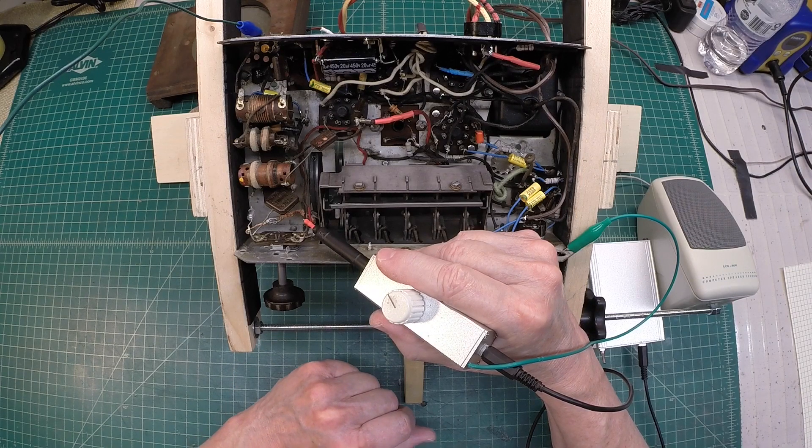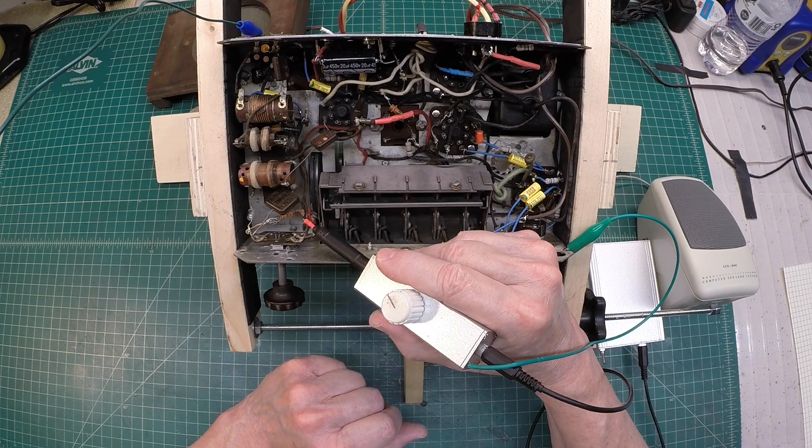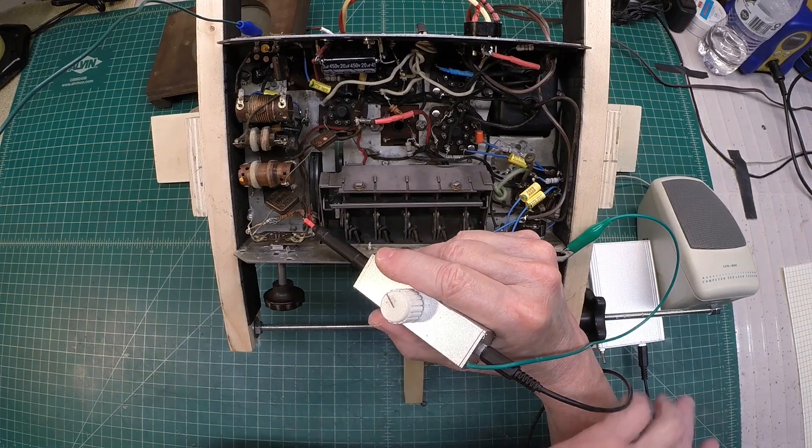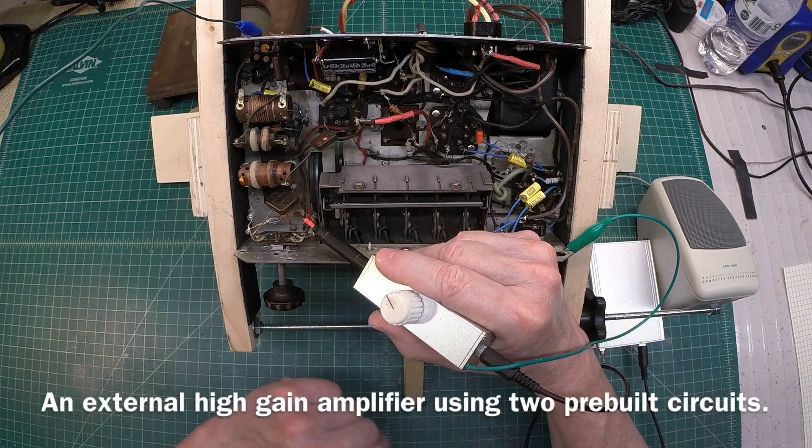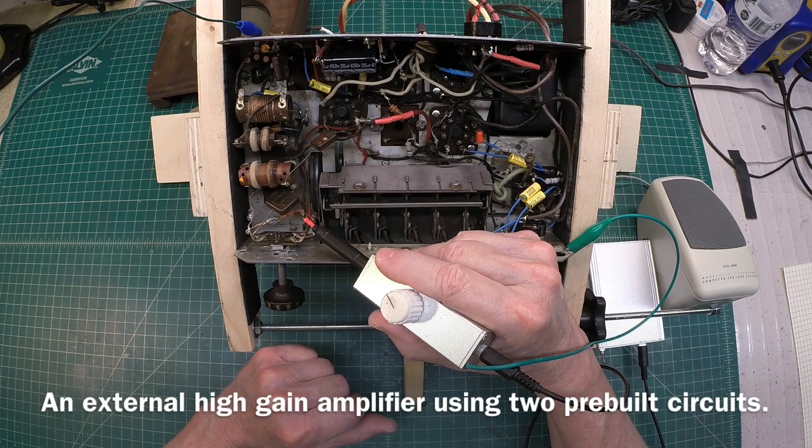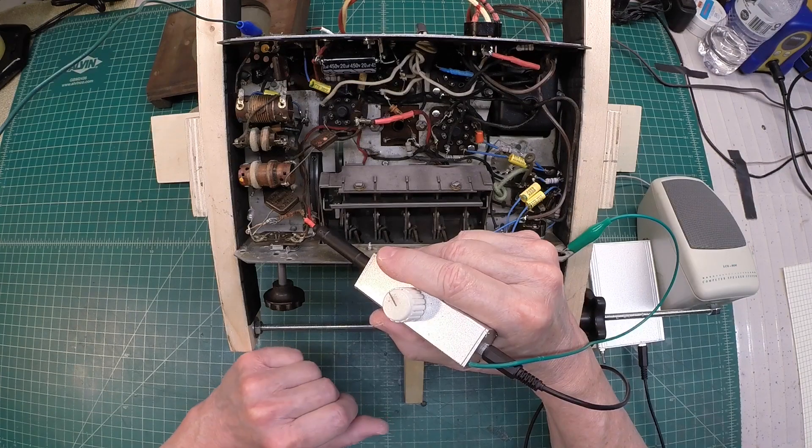I'm just attenuating the signal here using a 5 meg potentiometer not to overdrive the amplifier, which gives me a gain of 60 dB or amplifies the signal approximately 1,000 times.